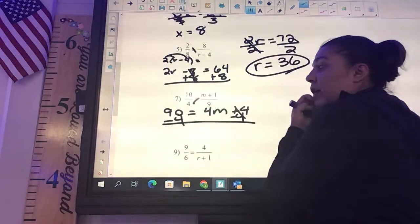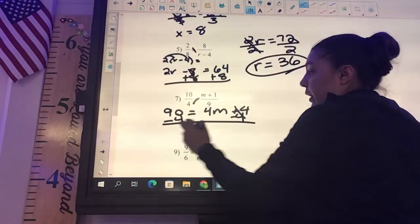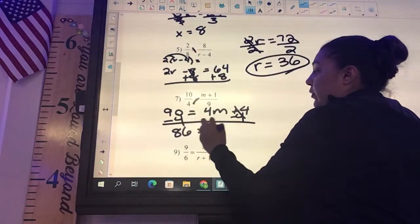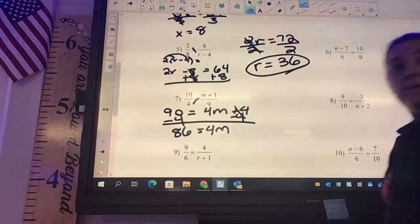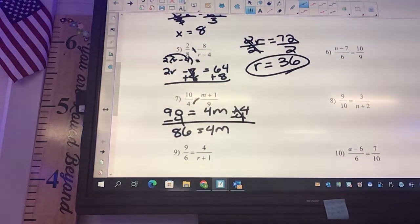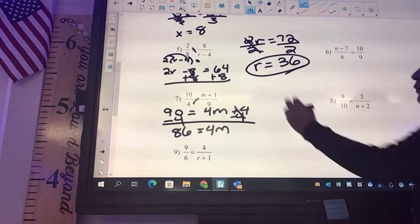So you're going to get what? 86 equals 4m. And then what? Divide by 4. So what is 86 divided by 4? 21.5. 21.5.